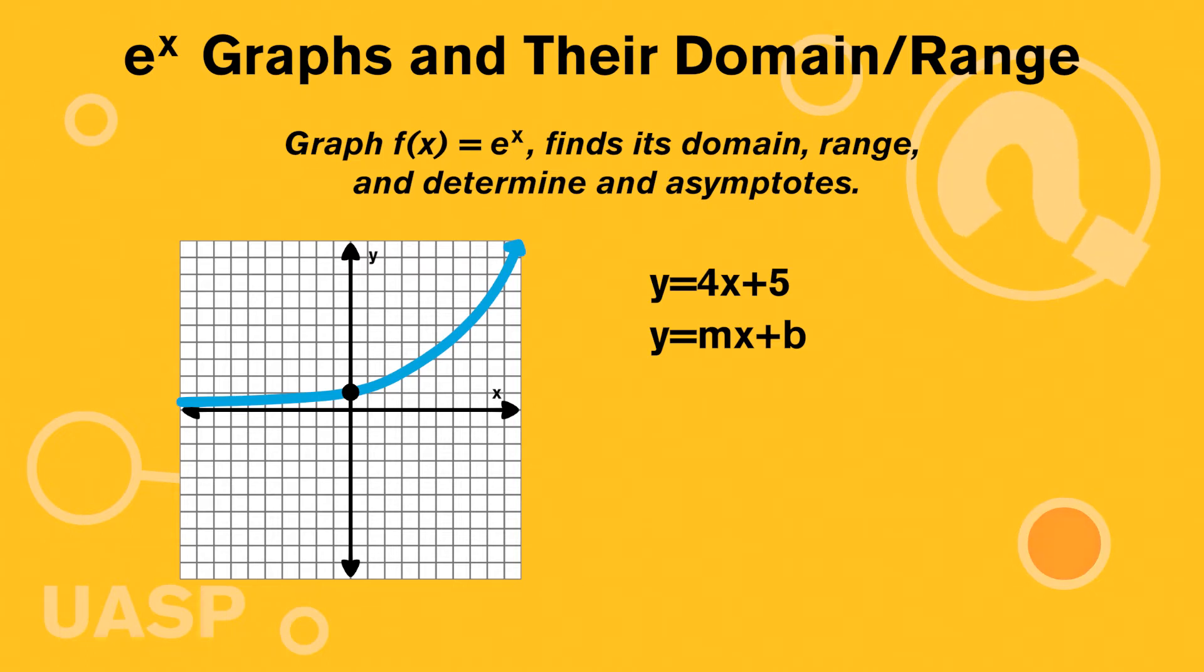Now, when talking about its domain, we're going to be talking about all of the different values that x could equal where we would get an actual output. We need to think about, x can go to positive infinity and x can go to negative infinity. So we need to think about, are there any values in between negative infinity and positive infinity where the values would not work?